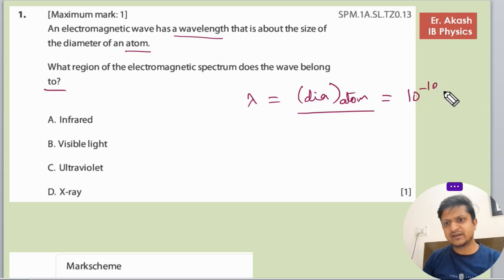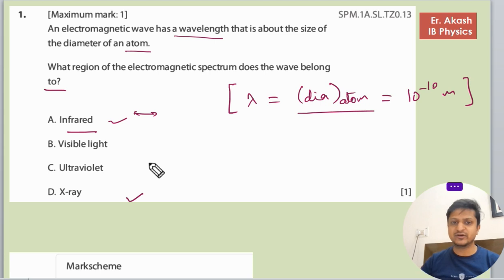You know that the diameter of an atom is 10 raised to the power minus 10 meters. So you have to remember in what range all these spectrums lie. You can also take the help from your data booklet because it is given in your data booklet.